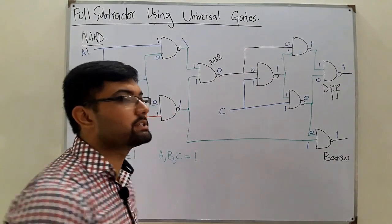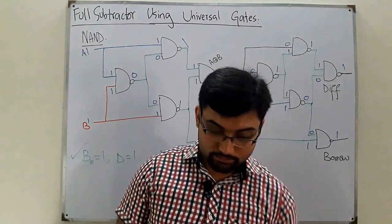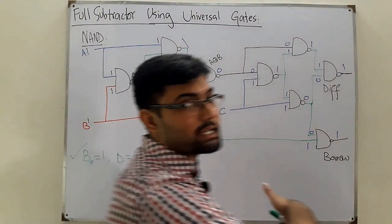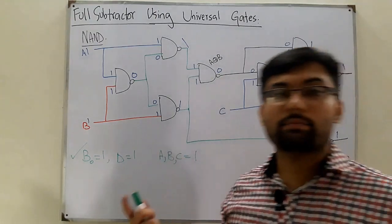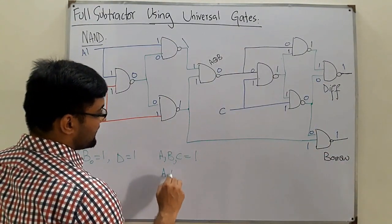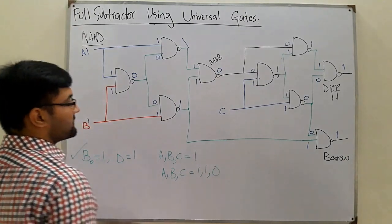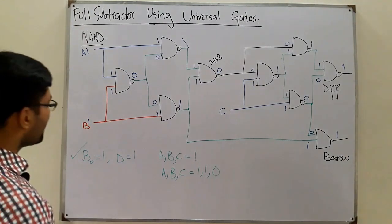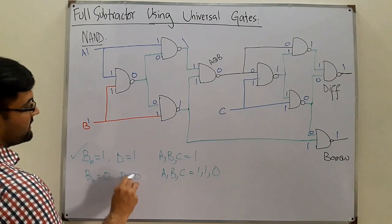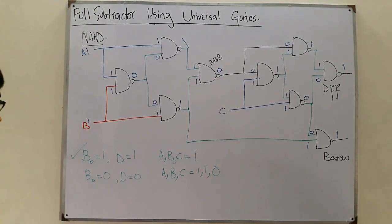Now let's take a second set of values: A=1, B=1, C=0. In this case, from the full subtractor truth table, the expected borrow is 0 and the difference is also 0.